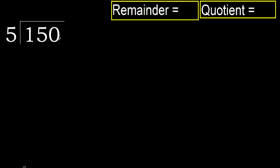150 divided by 5. 1 is less, therefore next. 15 is not less, therefore with 15, multiply 5 by which number is nearest to 15 but not greater.